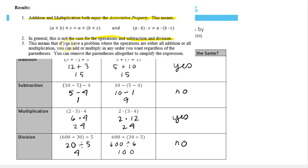So this means that if you have a problem where the operations are either all addition or all multiplication, you can add or multiply in any order you want, regardless of the parentheses. And you can remove the parentheses altogether to simplify the expression.